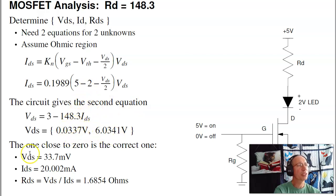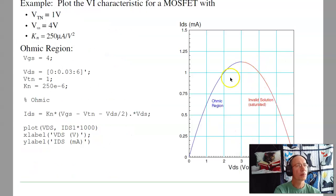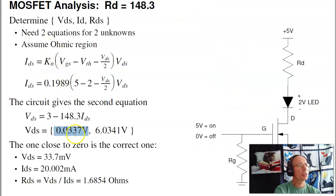The first solution is the correct one. The second solution comes from here. If I draw the load line, it'll intersect this parabola twice. The one on the left is the one I want. The solution on the right, the higher voltage, is the invalid solution. That's where I'm actually saturated. So for these two solutions, that's the correct answer, 0.0037 volts.